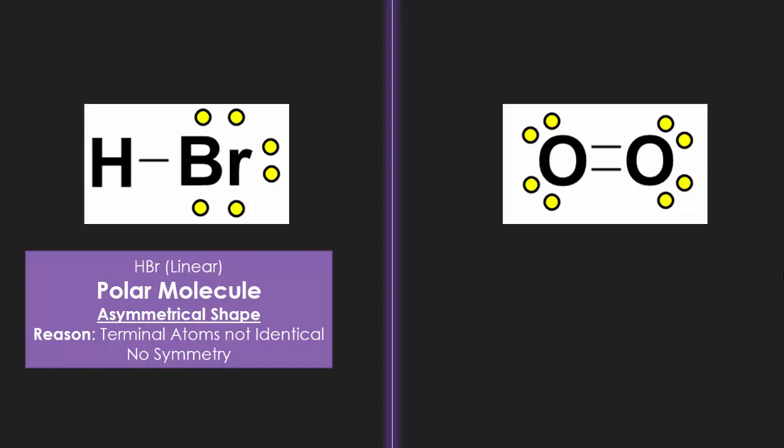So we can say that HBr, which is a linear shape, is asymmetrical, therefore it is a polar molecule. And the reason why is there's no symmetry, and the terminal atoms are not identical. They're not the same thing.